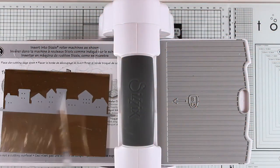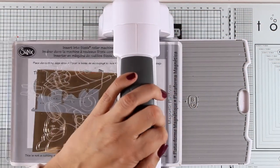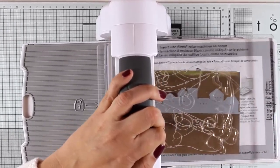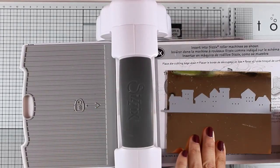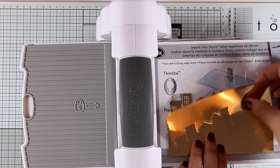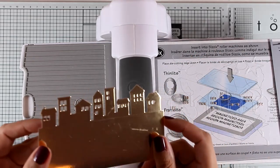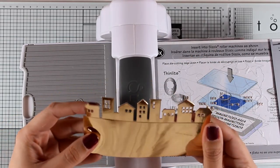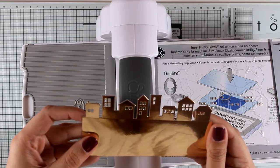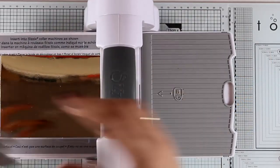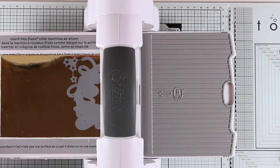For my second card I'm going to use this die again from the latest release that's called 'my town' and I'm going to cut it out from gold mirror paper. This die doesn't cut out the bottom of the buildings so it can create beautiful borders and you can control the length of them.